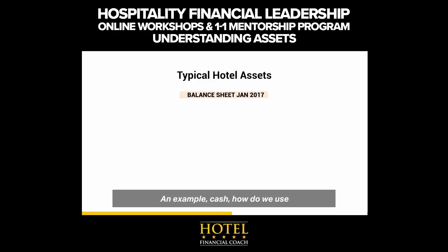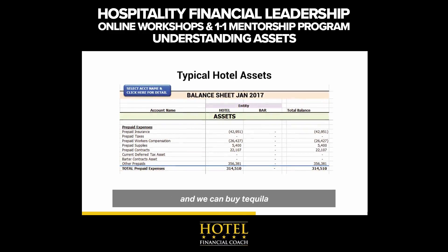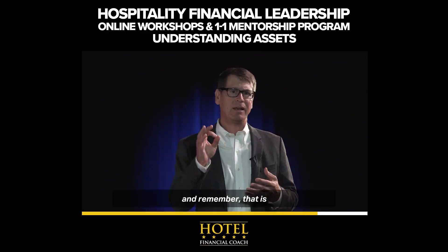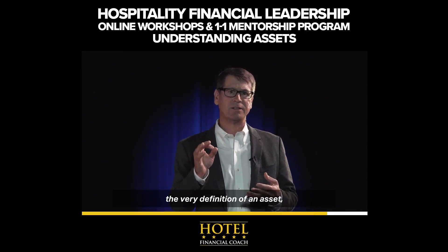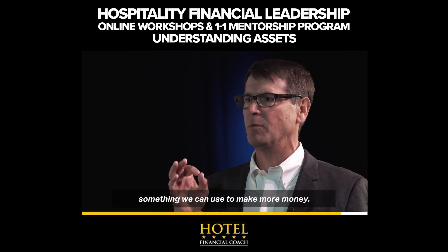An example: cash. How do we use cash to make more money? We can take cash and we can buy tequila. When we take tequila and we manufacture drinks with tequila, we make more money. So every single example of assets that I just listed, we can use those things to make more money. And remember, that is the very definition of an asset — something we can use to make more money.